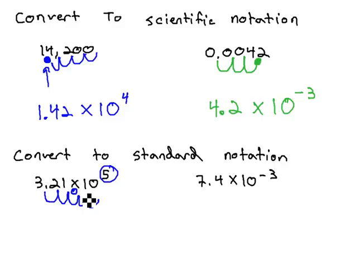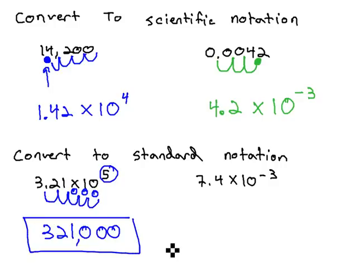For those extra jumps, we'll just slip in some zeros, and we get 3, 2, 1 with three zeros after it. This is 321,000.